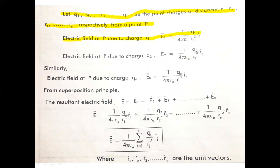Using Coulomb's formula, E₁ equals 1 over 4πε₀ times Q1 divided by R1² times R1̂, where R̂ cap is the unit vector. Similarly, the electric field at point P due to charge Q2: E₂ equals 1 over 4πε₀ times Q2 divided by R2² times R2̂.